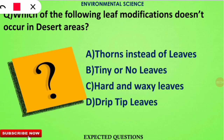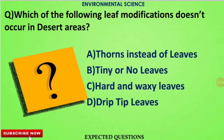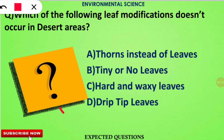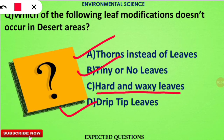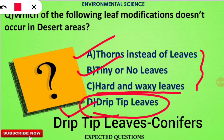The first question is: which of the following leaf modifications does not occur in desert areas? The correct option is D. In desert areas, we can see thorns instead of leaves, tiny or no leaves, and hard and waxy leaves — all present to reduce water loss. However, drip-tip leaves are not seen in desert area plants.